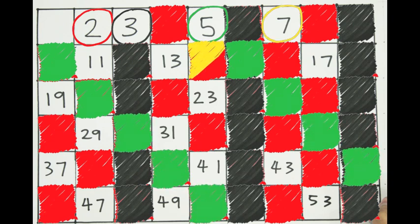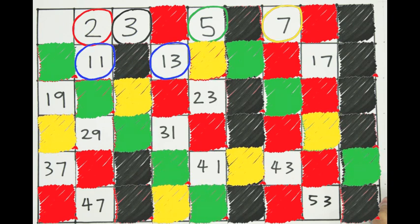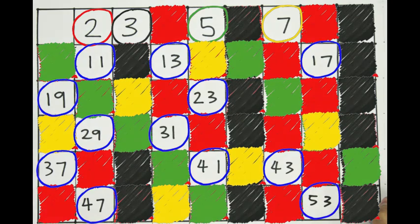If we were to repeat the steps for the rest of the numbers on the table, we would arrive at a table like this. All the numbers that are not already crossed out are prime numbers.